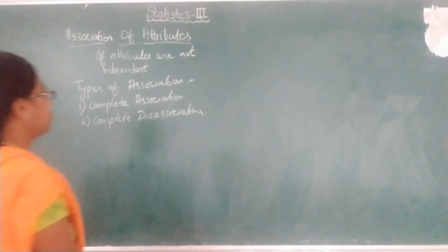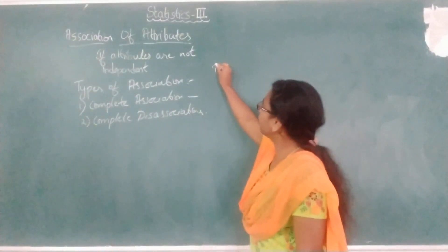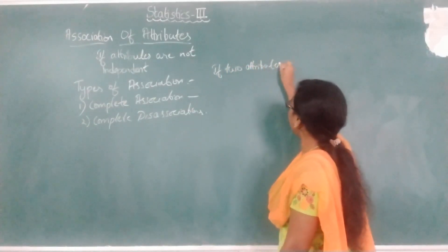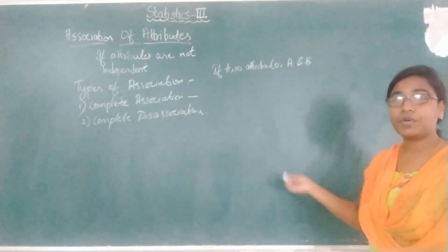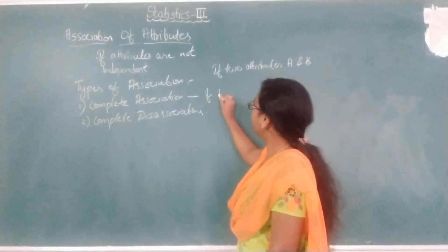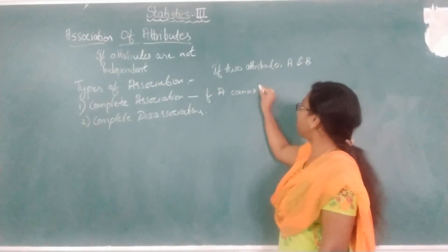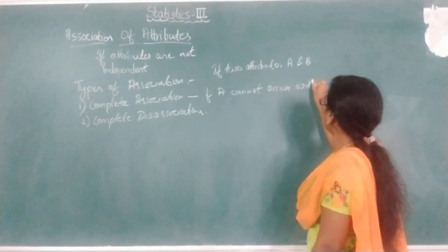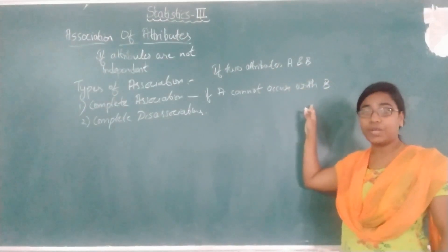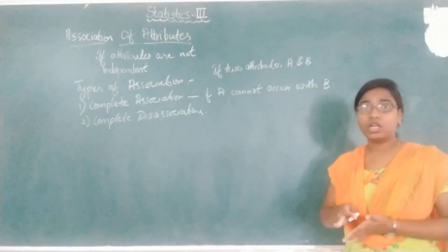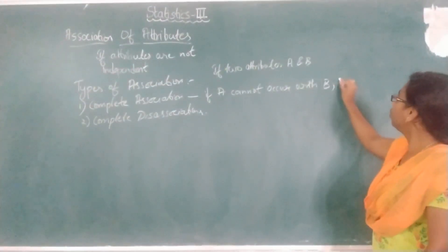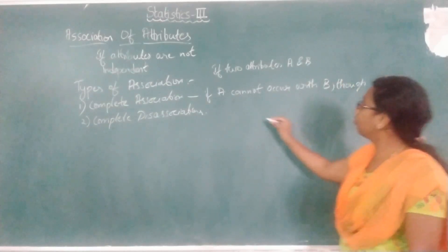Coming to complete association — complete association means if we have two attributes, suppose A and B. They are said to be completely associated if the attribute A cannot occur without B. That means attribute A occurs only if attribute B occurs.